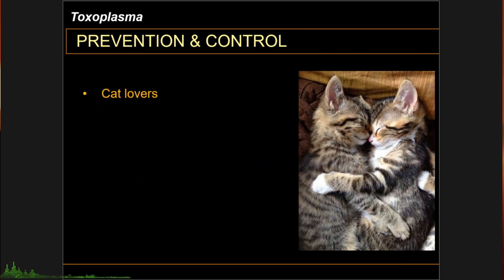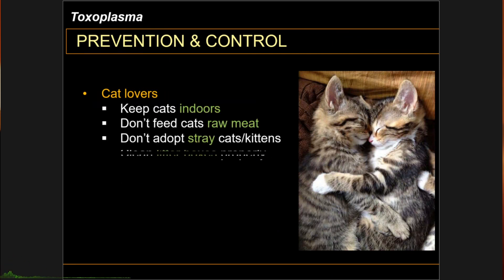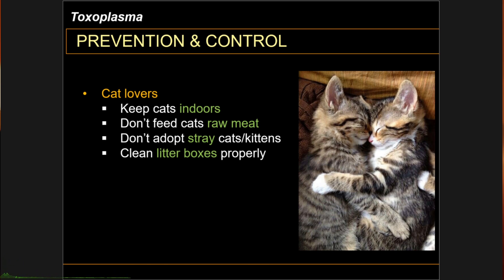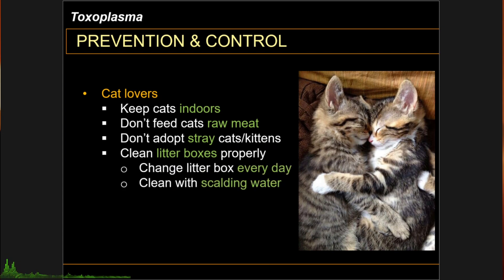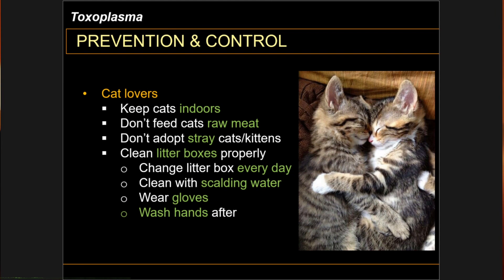For the cat lovers out there, keep your cats indoors. Don't feed your cats raw meat. Don't adopt stray cats or kittens unless properly treated. Clean litter boxes properly — change the litter box every day, clean them with scalding water, wear gloves and wash your hands after. Take note that soap and even chemicals are not usually effective against the oocyst.